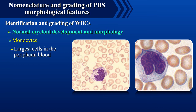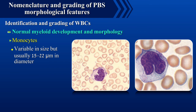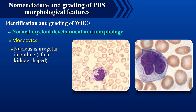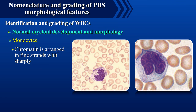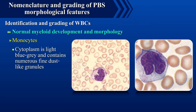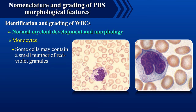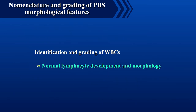Monocytes are the largest cells in the peripheral blood, variable in size but usually 15 to 22 microns in diameter. The nucleus is irregular in outline, often kidney shaped, and chromatin is arranged in fine strands with sharply defined margins. The cytoplasm is light blue to grey and contains numerous fine dust-like granules. Some cells may contain a small number of red to violet granules. Vacuolation may be present.